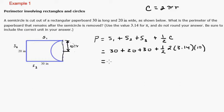So 30 plus 20 is 50, plus 30 is 80. And then 2 divided by 2, that goes away. And then 10 times 3.14. Well, the decimal's going to shift, so it's going to be 31.4. So I don't even need the calculator. You can use the calculator. Nothing wrong with that.